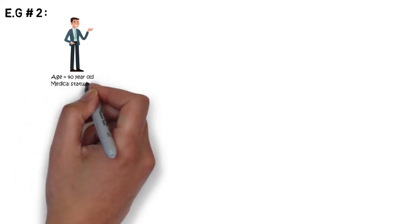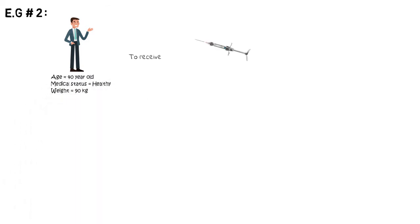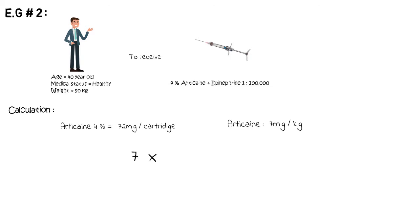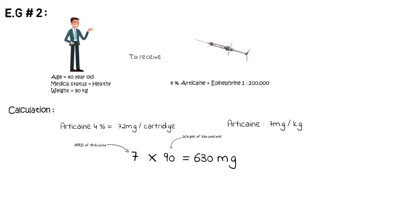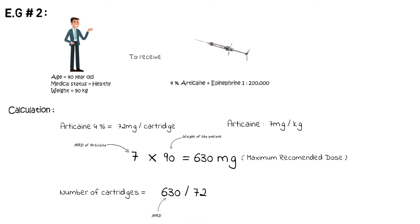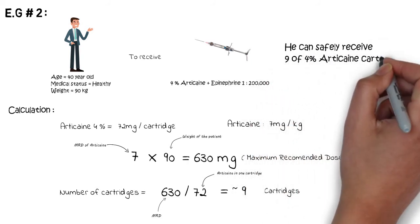Let's take another example of a 40-year-old healthy male who weighs approximately 90 kg. He is to receive 4% articaine with 1:200,000 epinephrine. A single cartridge of 4% articaine contains 72 mg, and the MRD for articaine is also 7 mg per kg. So 7 multiplied by 90 gives 630 mg — this is the maximum recommended dose of articaine for this patient. Dividing 630 by 72 gives approximately 9, so 9 is the maximum number of cartridges this patient can safely receive.